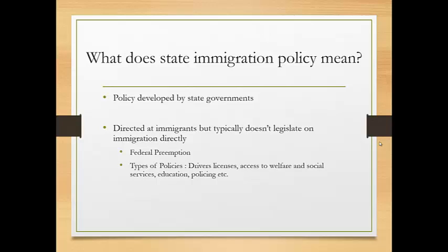What states do have authority over are things like driver's licenses, access to welfare and social services, education, and leasing. Even though they can't decide whether an immigrant can enter the country, they can dictate how that immigrant is treated and the types of services they have access to once they arrive. This is the area where many states and localities have created legislation, and this can have both positive and negative effects for immigrants.